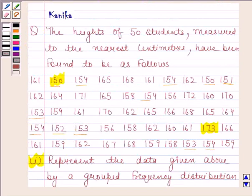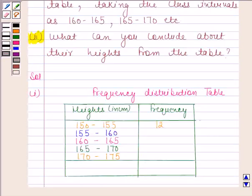Now, we will find the frequency of the class 155 to 160. The values covered within the interval 155 to 160 are 158, 156, 159, 156, 158, 159, 159, 158, and 159. The frequency of the class 155 to 160 is 9.